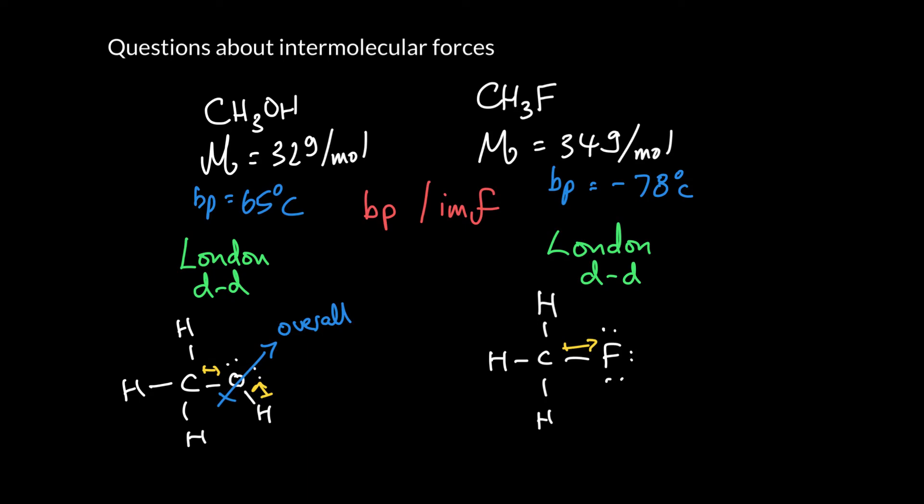So of course, the crazy thing we've missed is the hydrogen bond, because this one can hydrogen bond. We looked at it in the last video. This has the ability to form that very, very strong intermolecular force called the hydrogen bond. It can do so by arranging itself so that the hydrogen attached to the very electronegative oxygen can hydrogen bond to a lone pair on a very electronegative oxygen. Those are the two conditions we need for a hydrogen bond.